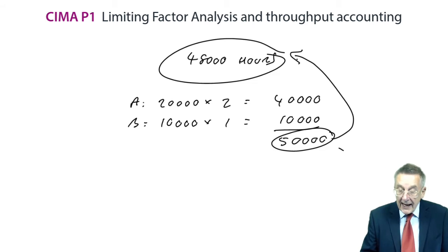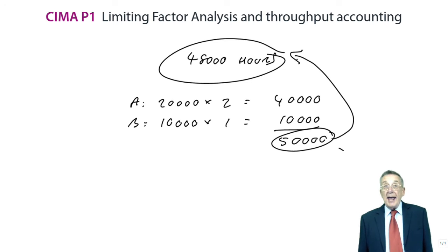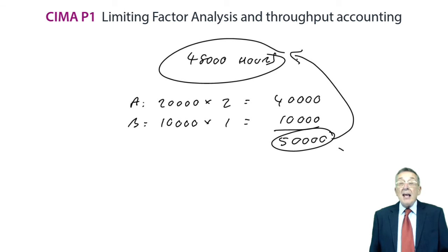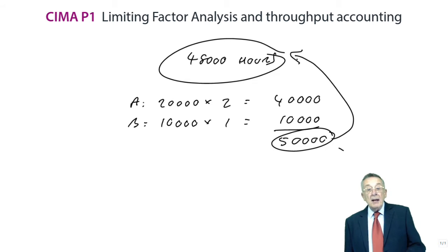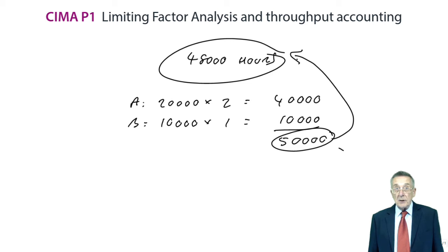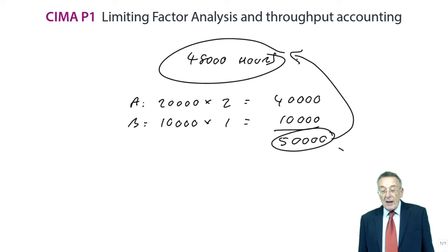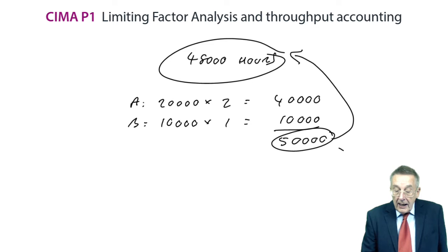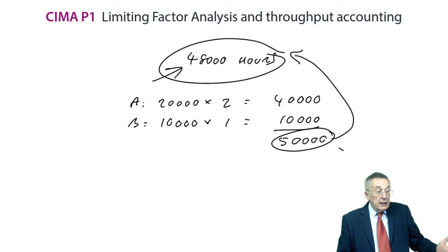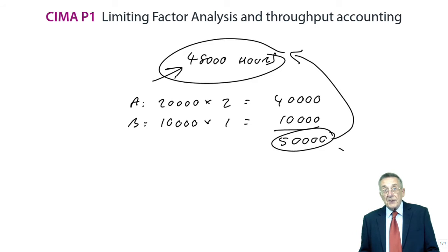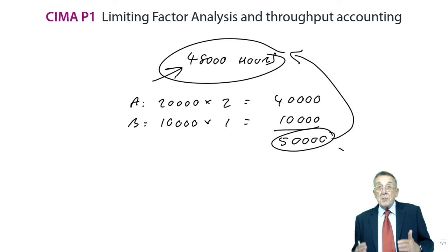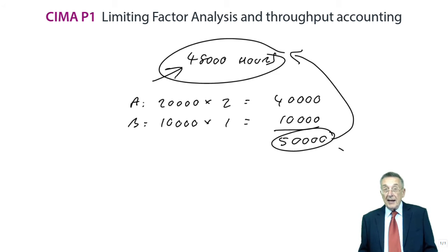We'd need 50,000 hours. We've only got 48. We can't produce A and B in full. The question is, how many A's, how many B's are we going to produce to get the maximum profit, but at the same time not to use more than the 48,000 hours available? And that's what I mean by a limiting resource. The hours are limited. It could be anything. It could be materials that were limited, but we've got a limited resource, and it's that that stops us producing to meet the full demand.